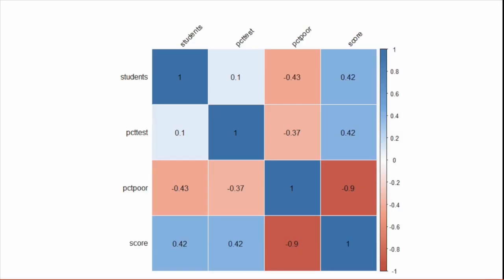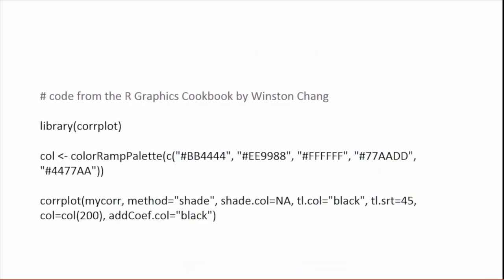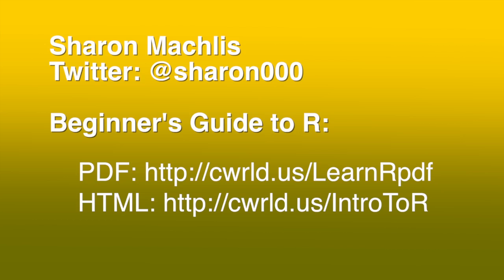But a visualization is so much nicer. Here's the code: load the library, set the color palette, generate the correlation plot. There you have it — five data visualizations in R in five lines of code or less. I'm Sharon Maklis with Computer World.